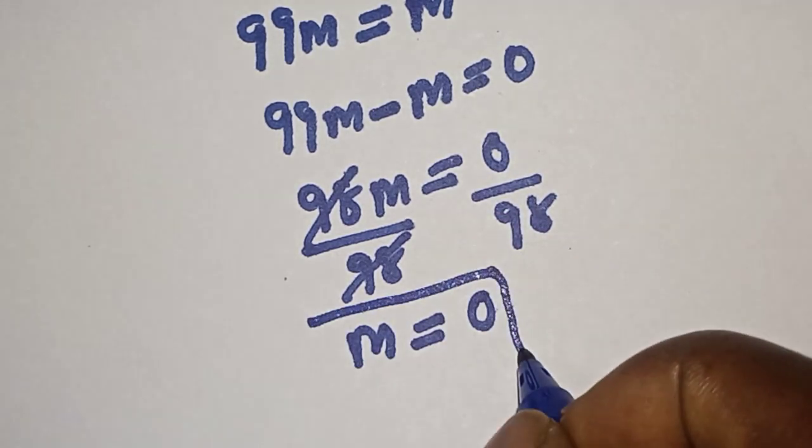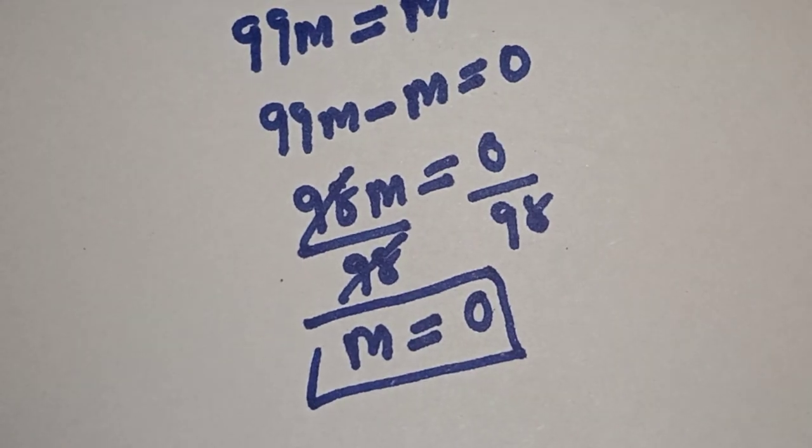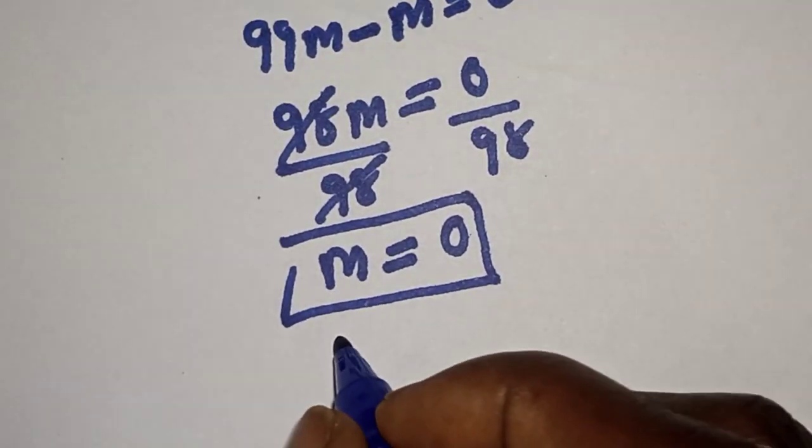This is the final answer: M equals 0. We can check to confirm if our answer is correct.